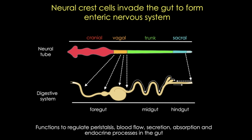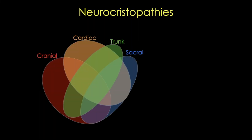Now that we know where neural crest cells go and what they become, let's talk about what happens when there are problems with this important cell population. Abnormal specification, migration, differentiation, or death of neural crest cells during development leads to a set of syndromes and diseases called neural crestopathies, which comprise a broad spectrum of congenital malformations. One clue to neural crest involvement is that seemingly unrelated multiple organ systems are often affected because they share the same embryonic origin. Neural crestopathies can be classified according to the neural crest origin and which developmental step is disrupted.